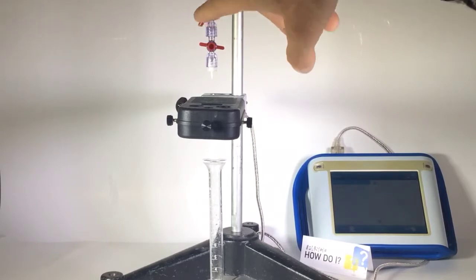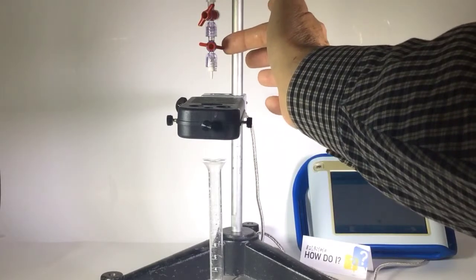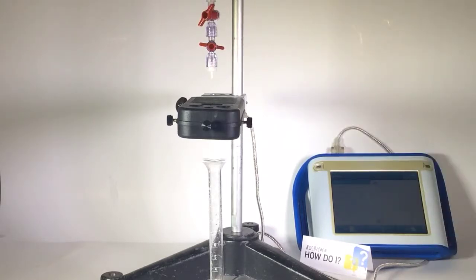I've already adjusted the top to a nice steady drip. The bottom stop cock is basically just to turn it on and off.